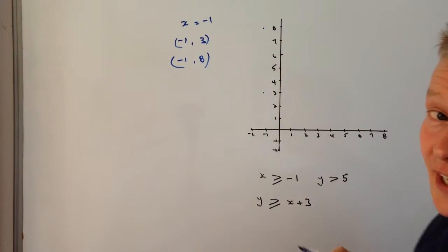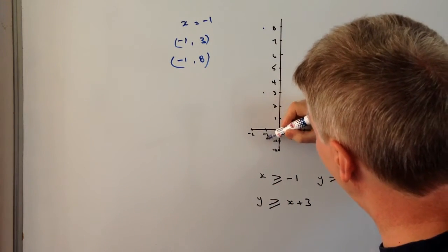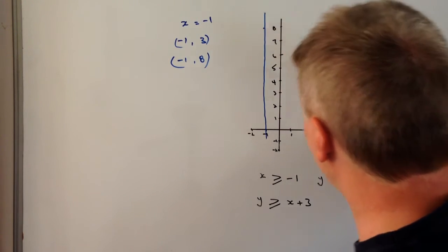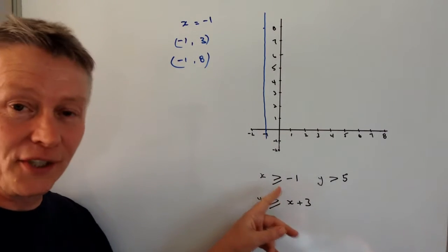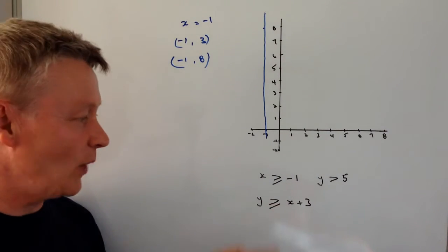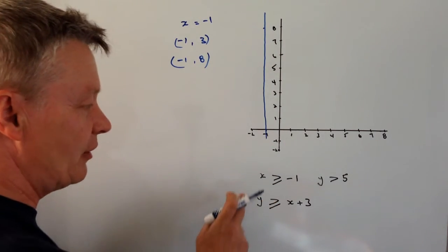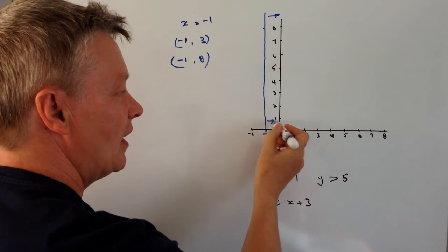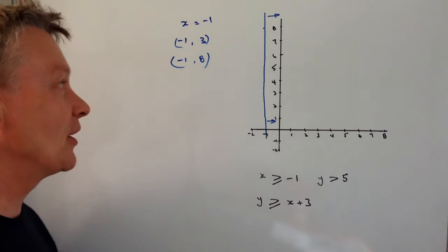Now I'm also going to make it a solid line because what we're saying is the inequality is equal to or greater than minus 1, and the common convention is when it's equal to, you draw it as a solid line. It's also easier if you mark in the arrows that the inequality is going to satisfy. In other words, because it's greater than, it's going to be on the right hand side of minus 1.